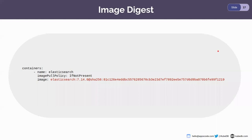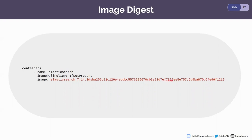One of the global changes in KubeDB is adding image digest. When the controller generates resources like stateful sets, it now uses the image with a digest value. When the image is changed or something happens to the image, the recommender can accurately generate a recommendation based on the digest. Since we know that when any change is applied to a Docker image the hash changes, you will now see all resources with image digest in all databases managed by KubeDB.